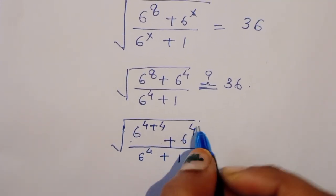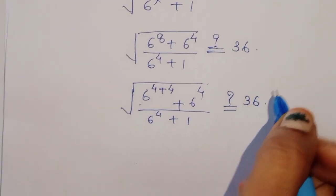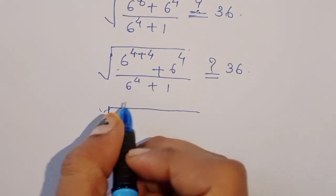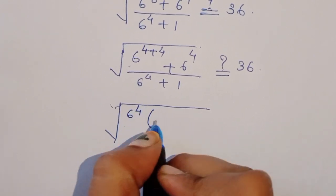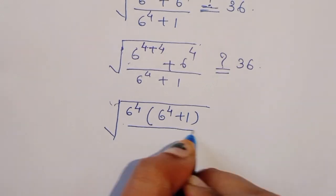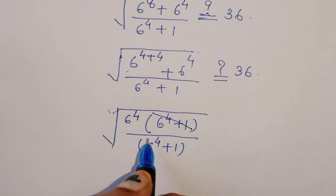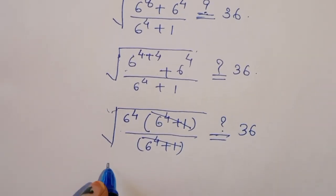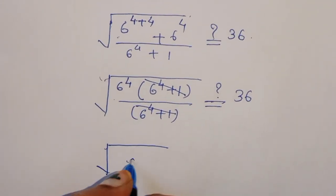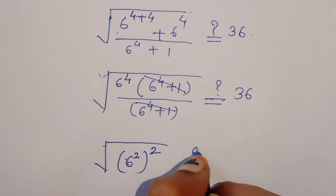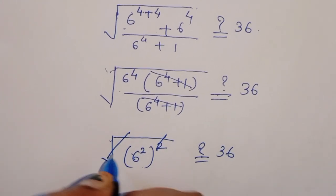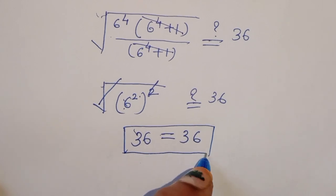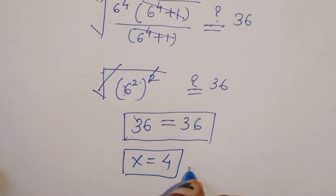Taking 6 raised to 4 common in the numerator, we get 6 raised to 4 times (6 raised to 4 plus 1), and the denominator is 6 raised to 4 plus 1, so these cancel. We are left with 6 raised to 4, which equals 6 raised to 2 whole squared, that is 36. So 36 equals 36, LHS equals RHS, therefore x equals 4 is the correct solution. Thank you.